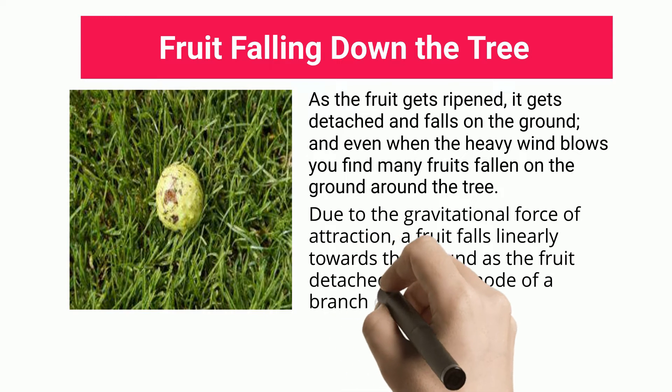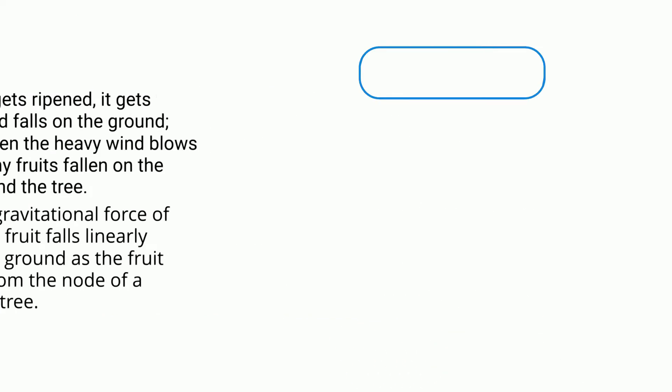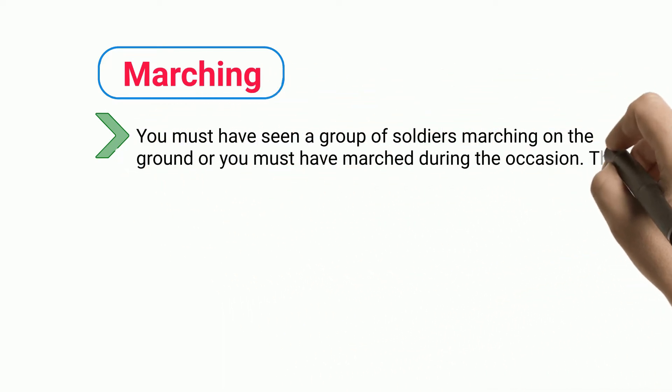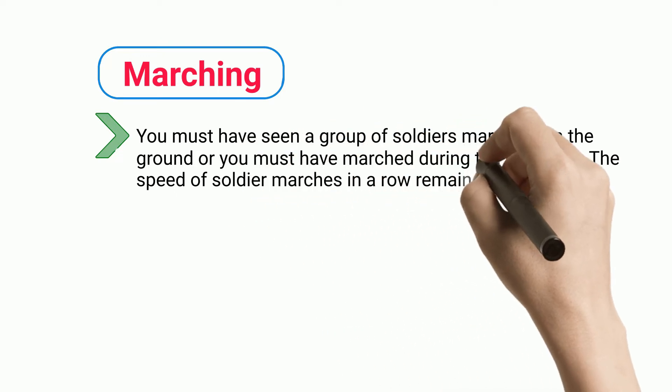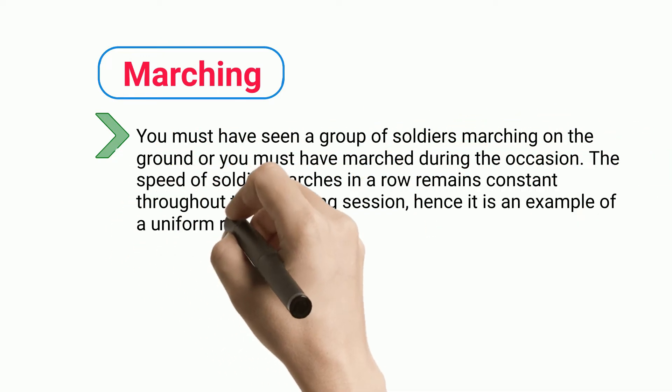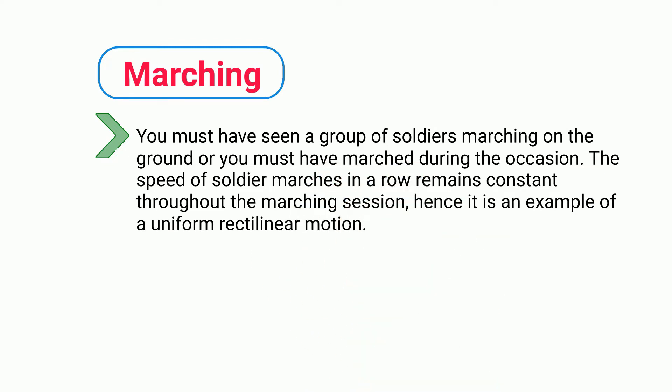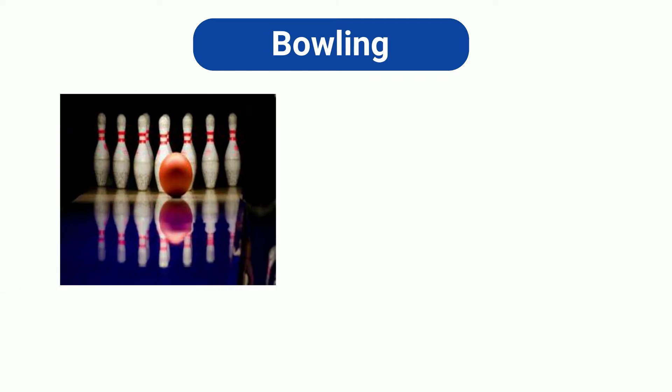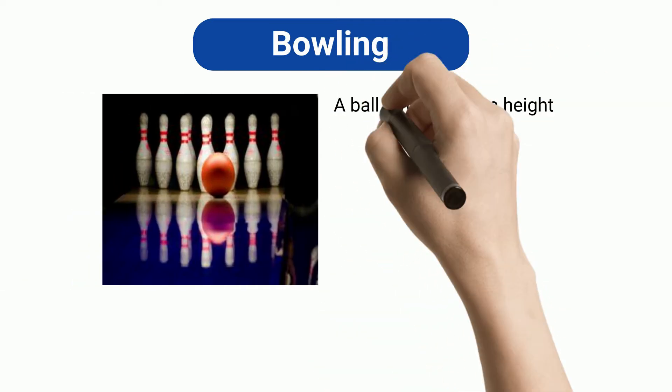Marching: You must have seen a group of soldiers marching on the ground, or you must have marched during the occasion. The speed of soldiers marching in a row remains constant throughout the marching session. Hence, it is an example of a uniform rectilinear motion.